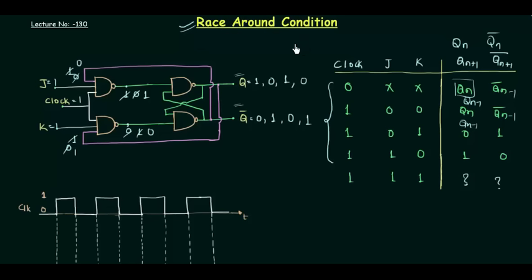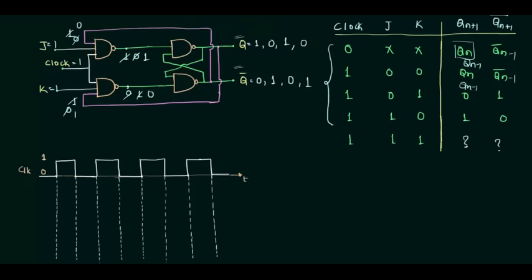This condition where the output continuously changes from 1 to 0 and back again is called the race around condition. Remember, there is a difference between toggling and race around condition — toggling is controlled, but the race around condition is not controlled. We are trying to convert this race around condition into a controlled toggling condition, which can be directly used in counters.